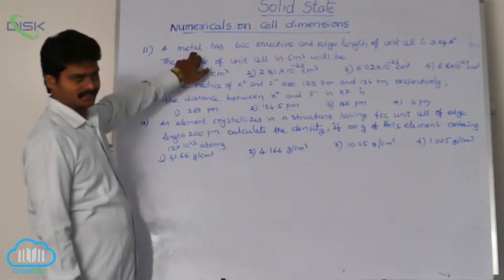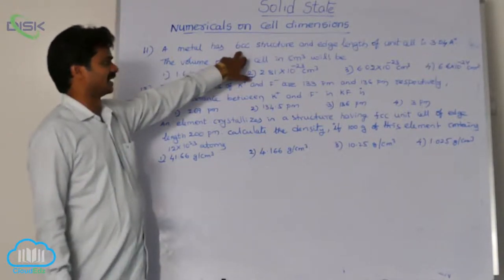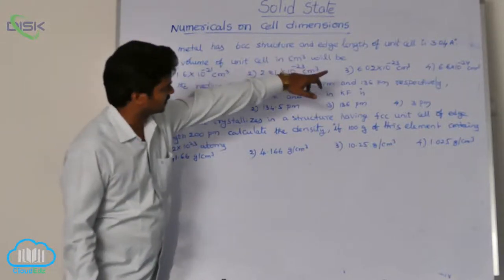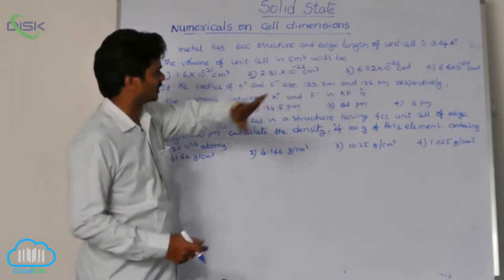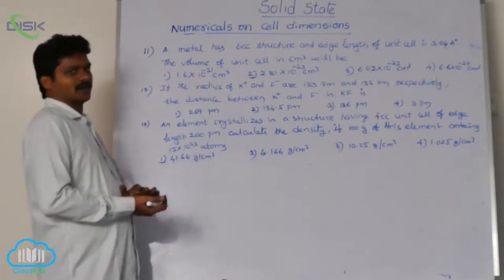Here, metal is crystallizing in BCC lattice. With edge length, that means A is given as 3.04 angstrom units, asking for volume.